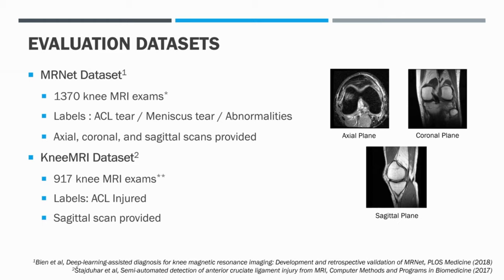This is currently the largest publicly available knee MRI dataset with labels for knee conditions. The second is the Knee MRI dataset, where the ACL condition is labeled for each case and sagittal scans are provided. Prior to our work, the state-of-the-art for both datasets is the MRNet architecture proposed by Bien et al., and in our experiments we compare LNET with MRNet.